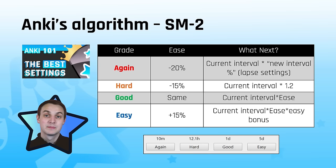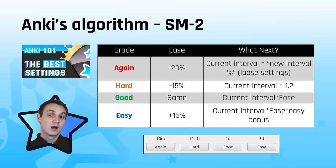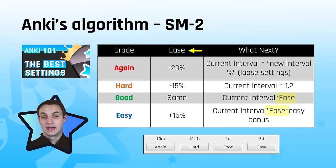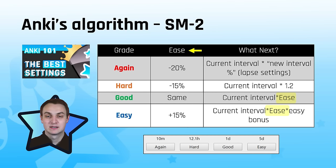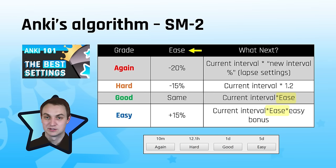FSRS is going to do the same thing — there's a different equation depending on what you do. They both take into account the interval, how long it's been since you saw that card. Depending on which button you push, it changes the ease: if you get it wrong the ease goes down, if you hit good it stays the same, if you hit easy it increases. SuperMemo 0 just doubled intervals, whereas SuperMemo 2 introduced this ease factor to separate out more difficult cards and show them more often.